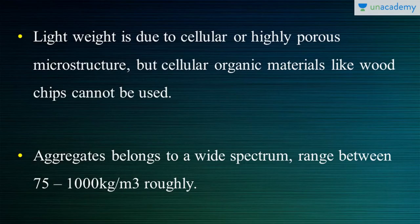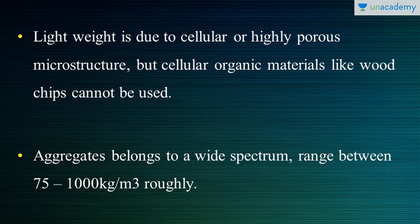Lightweight concrete is light due to its cellular or highly porous microstructure. Using very lightweight aggregates makes the concrete highly porous at the microstructure level. However, organic materials like wood chips cannot be used — only selective aggregates can be used. Otherwise porosity increases to a level that affects the strength of the concrete.